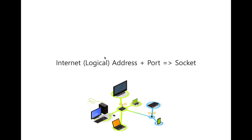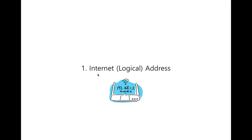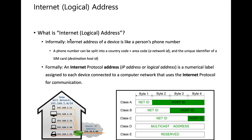An internet address plus a port gives us the socket. We need to understand how an internet address is represented in devices. You have seen IP addresses — they look like 192.168.x.x. Informally speaking, an internet address of a device is just like a person's phone number.